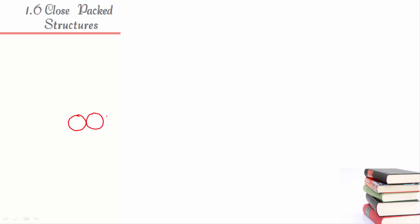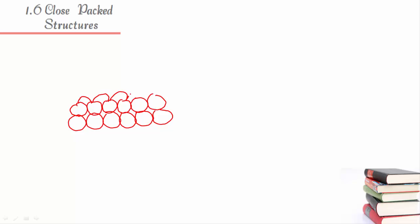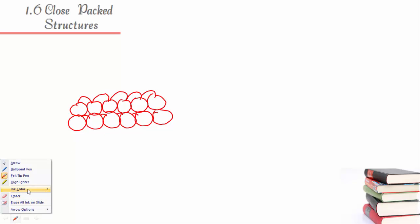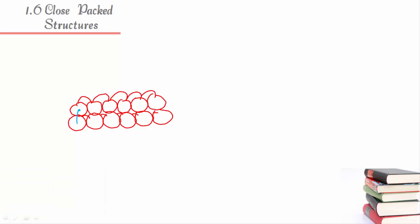Now let's talk about close packing in three dimensions. In three dimensions, you have a first layer, and you keep placing other layers on top of it — layer on sphere on sphere. Eventually you realize that we get a cube, and this is known as cubic close packing.